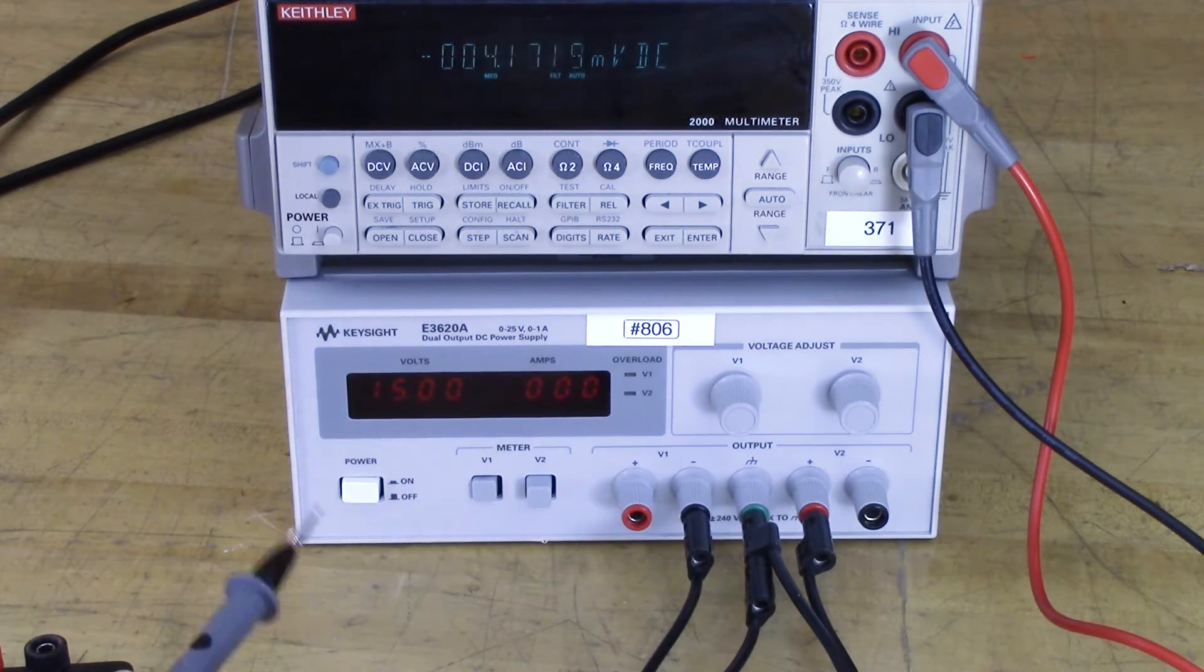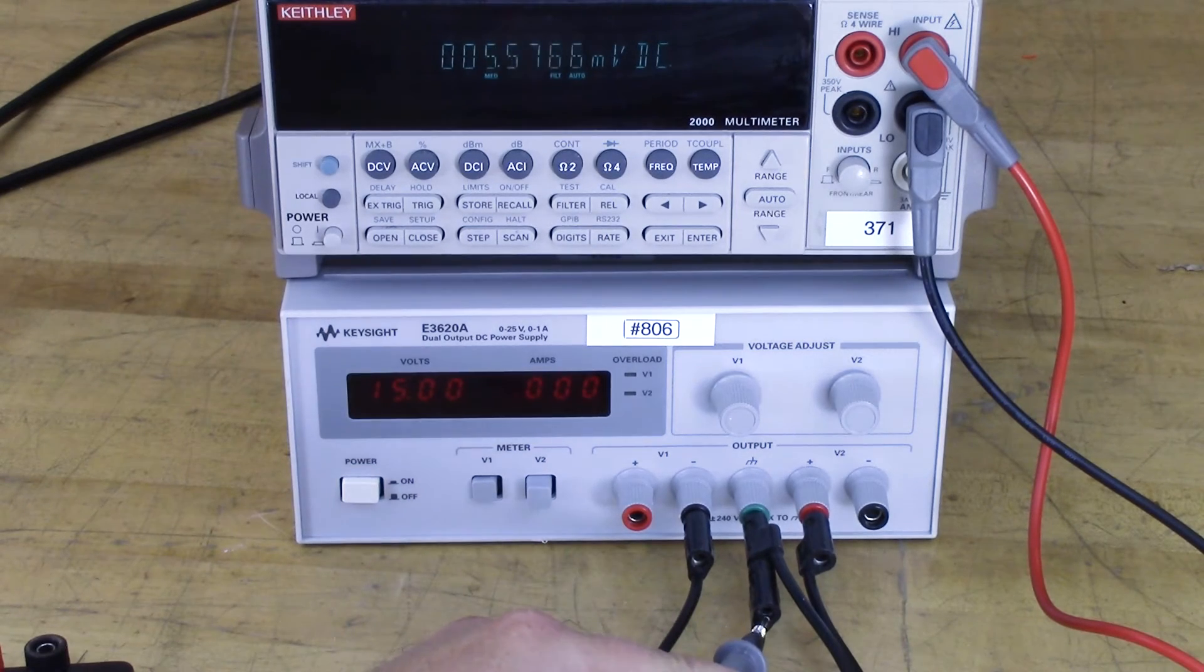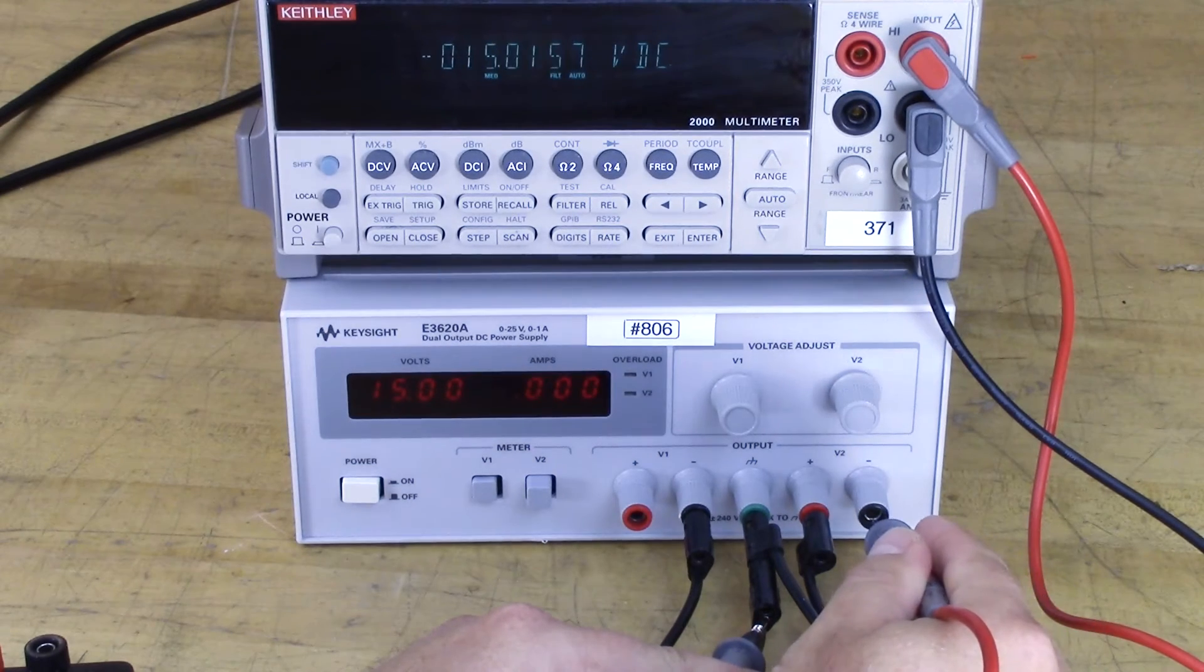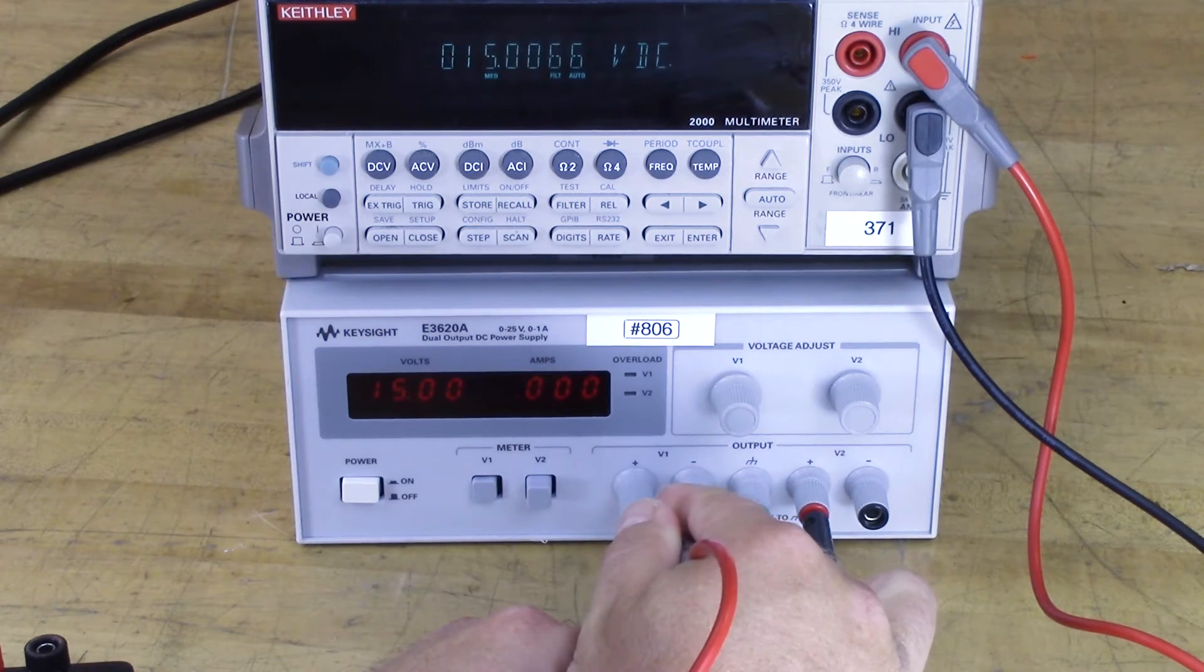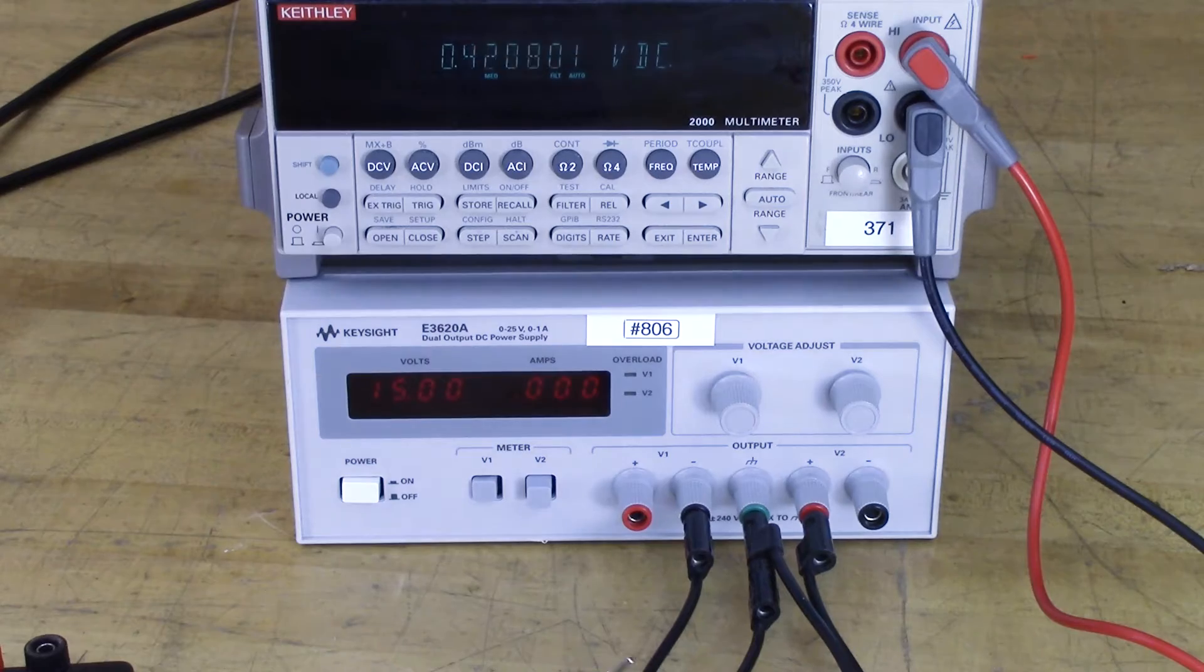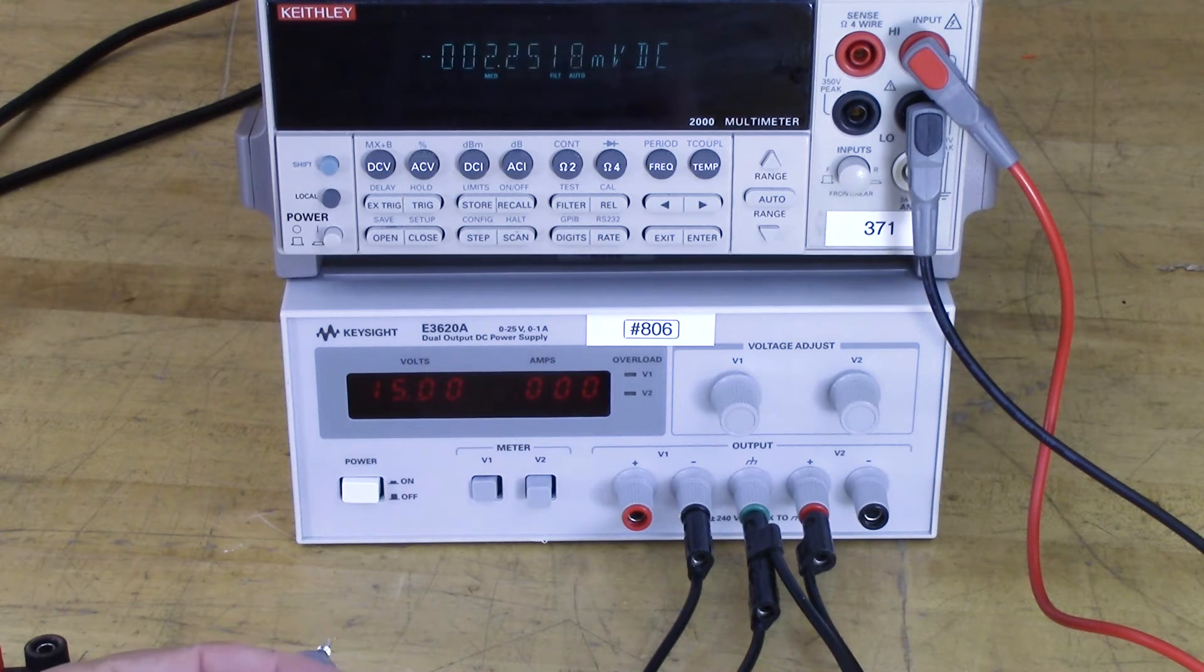So again, if I have my multimeter probes, I connect from this as my reference point to here, this is negative 15, and from here to there, it's 15 volts. So the only difference between having these or ignoring that is now this is a plus minus 15 volts that is referenced to earth ground.